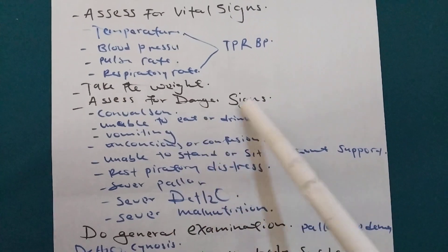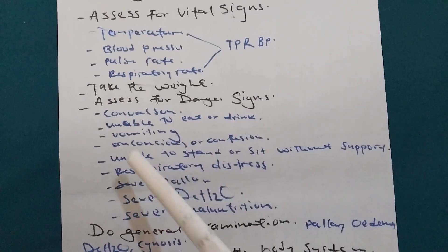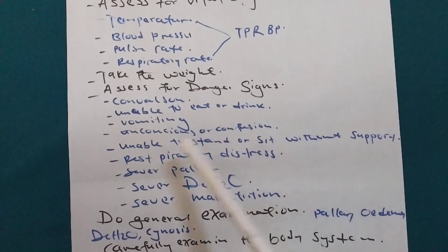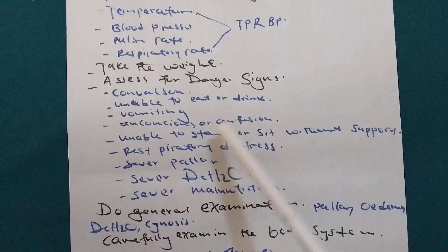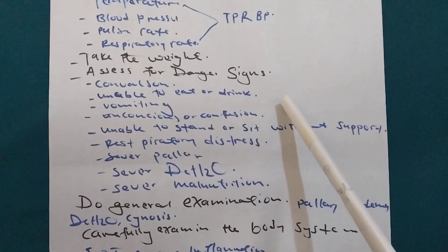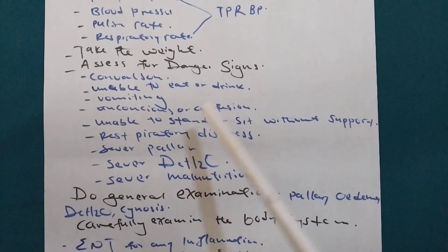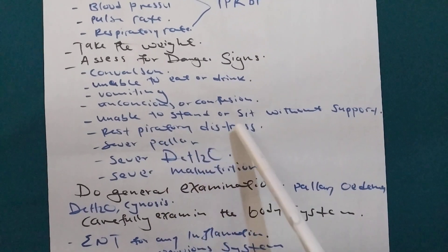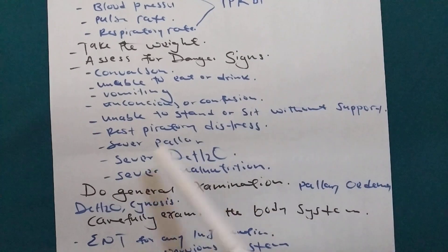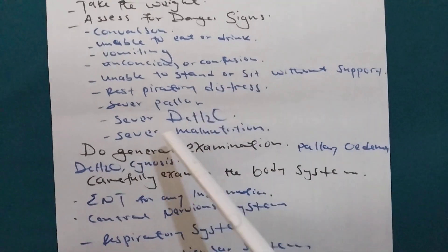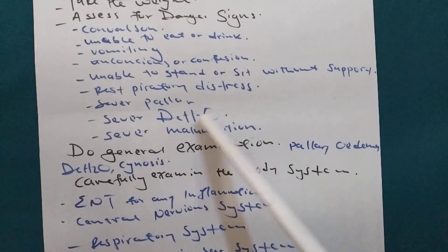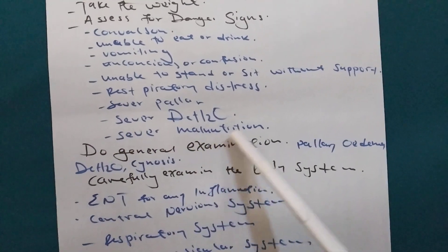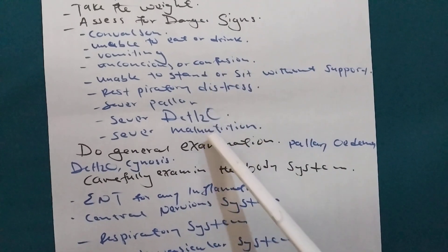Then we will assess for danger signs. Those danger signs include convulsion, unable to eat or drink, someone vomiting profusely, unconsciousness, or someone who is confused. If someone cannot stand without support, or is in respiratory distress, and you can see severe pallor when you assess the eyelid, or severe dehydration, or severe malnutrition — that will depend on your findings.